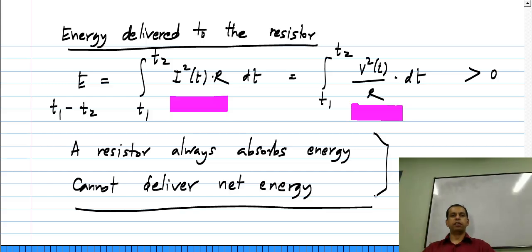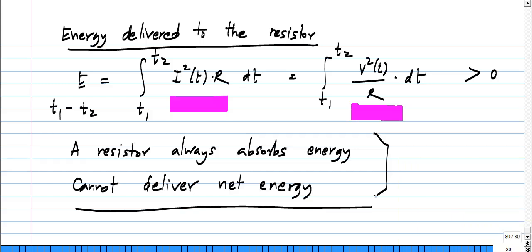Something that can only absorb energy but can never deliver net energy cannot act as an energy source. Such an element is known as a passive element. A passive element is one where the power is always positive, which automatically implies that it always absorbs energy and can never deliver it. A resistor only absorbs power, which consequently means it can only absorb energy and can never generate energy and provide it to the rest of the circuit.